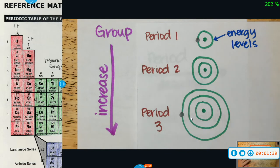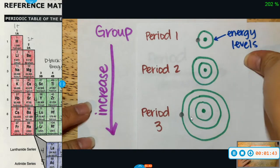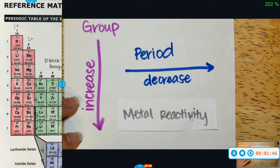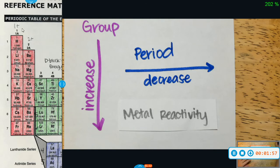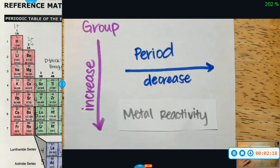Your metal reactivity as you go across the period is going to decrease. This has a lot to do with your valence electrons too. In group one, you only have one valence electron to get rid of, versus in group two, you have two valence electrons you have to get rid of. It's easier to get rid of one than it is to get rid of two valence electrons. So for your metals, as you go across the period, it's going to decrease because of the number of valence electrons you have to get rid of.